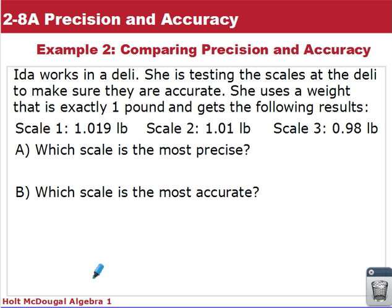Scale one reads 1.019 pounds. Scale two reads 1.01 pounds. And scale three reads 0.98 pounds. So which scale is the most precise?